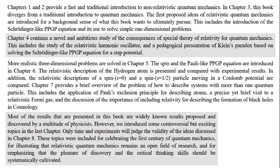Chapter 7 provides a brief overview of the problem of how to describe systems with more than one quantum particle. This includes the application of Pauli's exclusion principle for describing atoms, a precise yet brief visit to a relativistic Fermi gas, and the discussion of the importance of including relativity for describing the formation of black holes in cosmology.